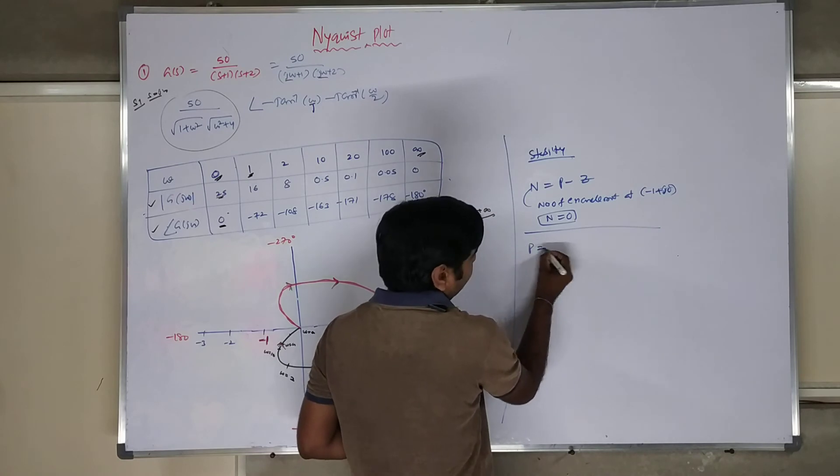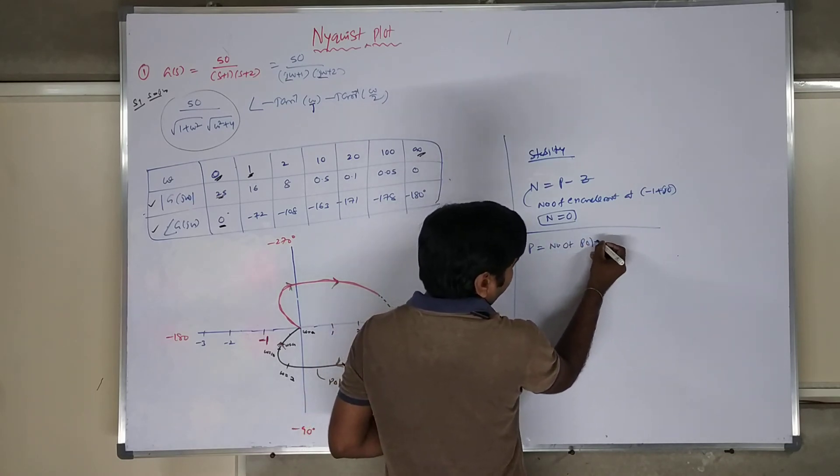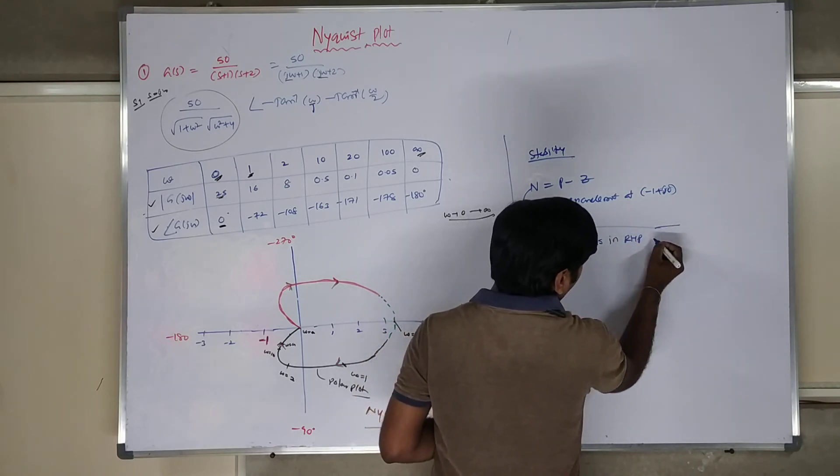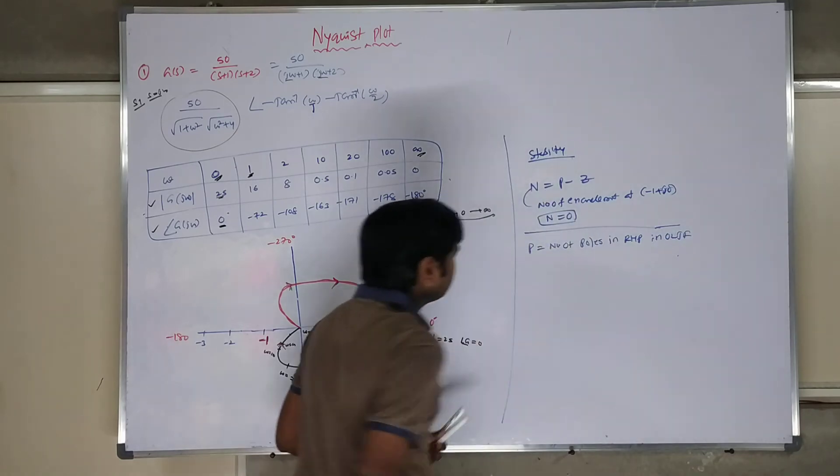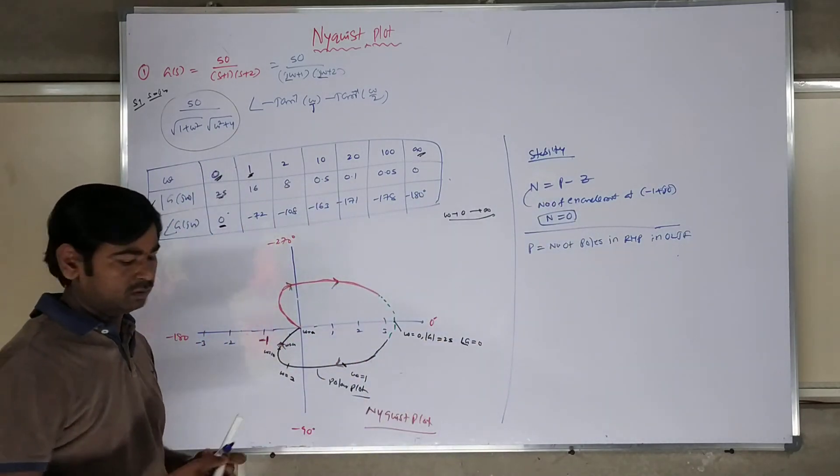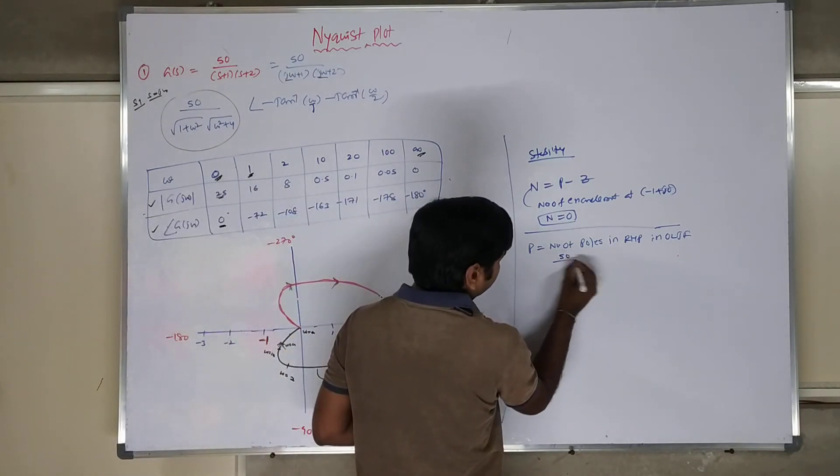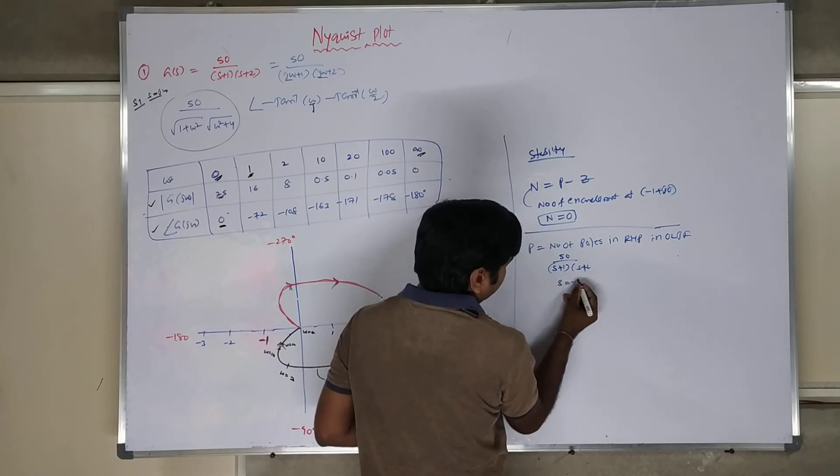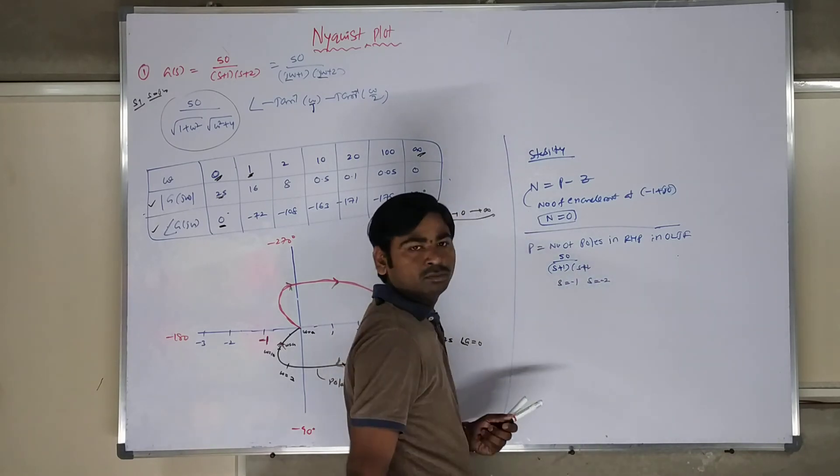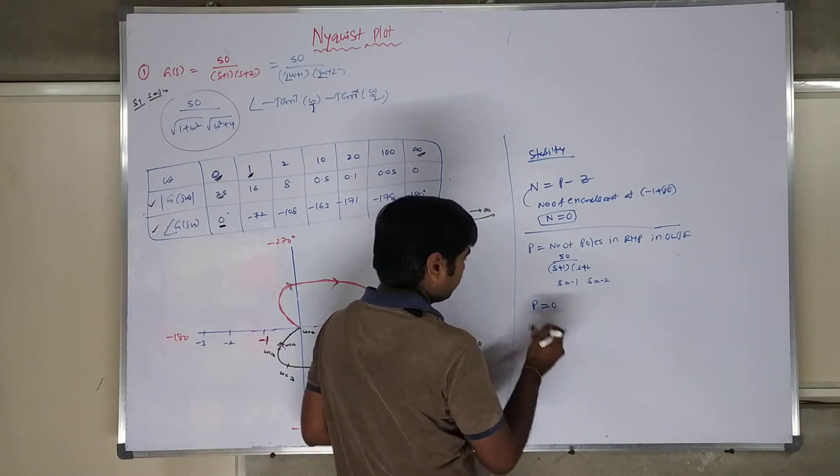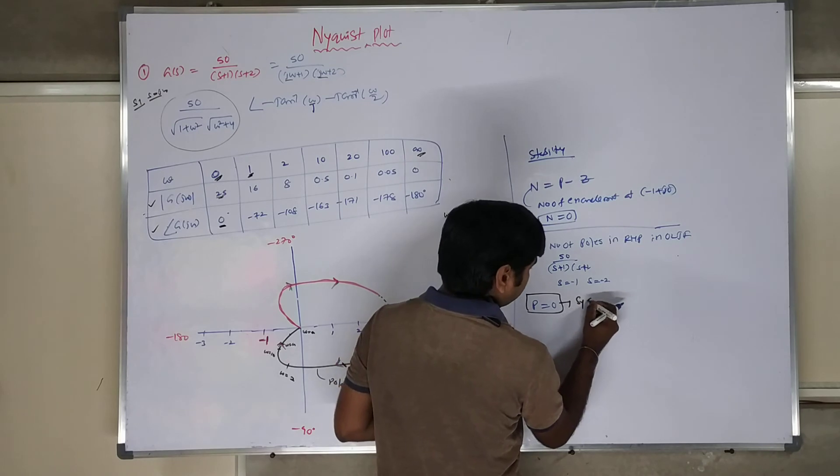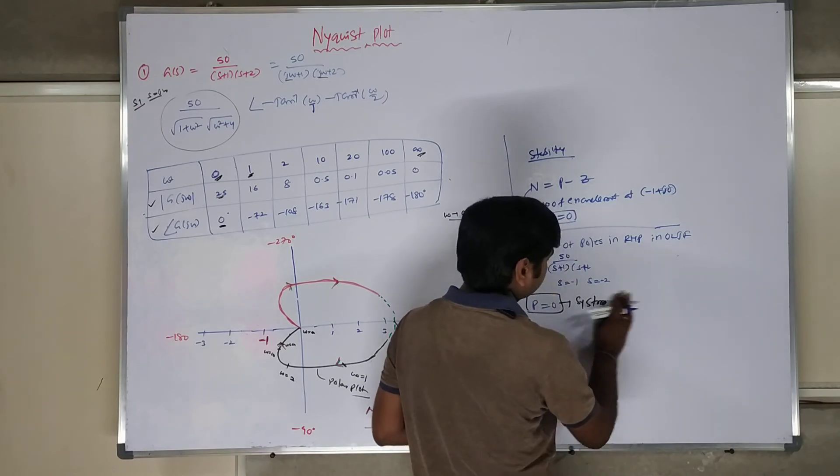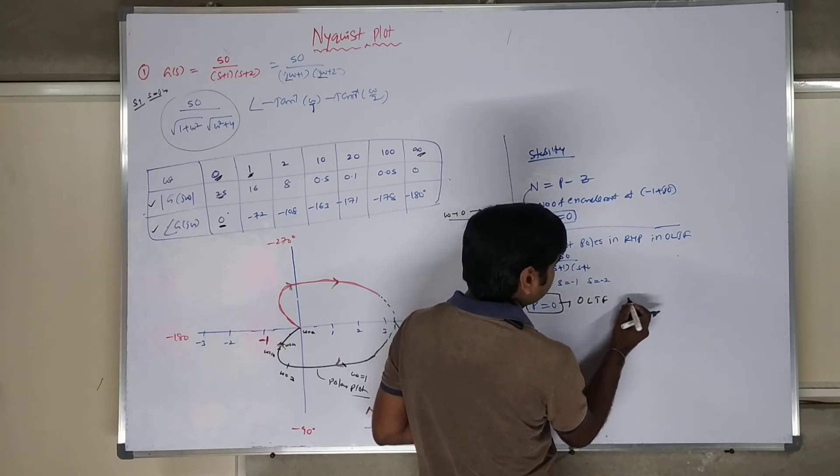First of all, P is equal to number of poles in right half plane in open loop transfer function. So let us check your open loop transfer function. That is 50 by S plus 1 into S plus 2. S is equal to minus 1, S is equal to minus 2. So there is no right half plane poles. So P is equal to 0. The moment P is equal to 0, system is stable. That is open loop transfer function is stable.